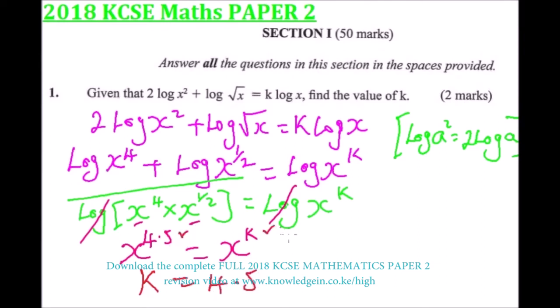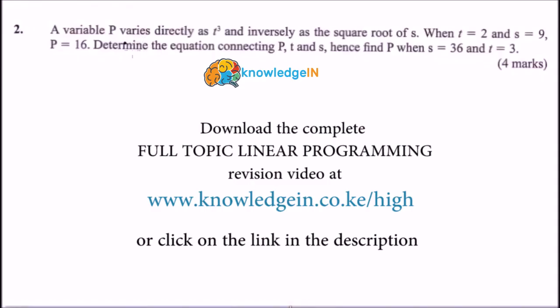If we have x raised to power 4.5 equals x to power k, then k is the same as 4.5. And that is how you do that question. This is 2018 mathematics paper 2, question number 2.